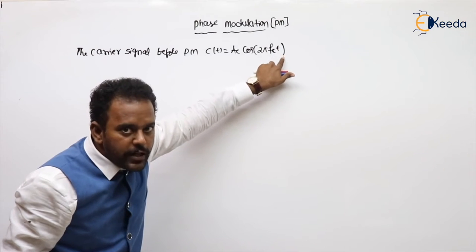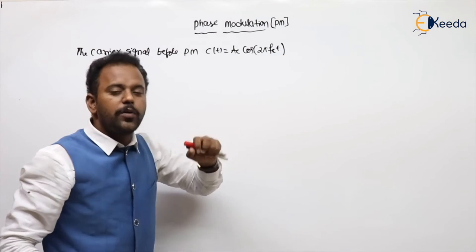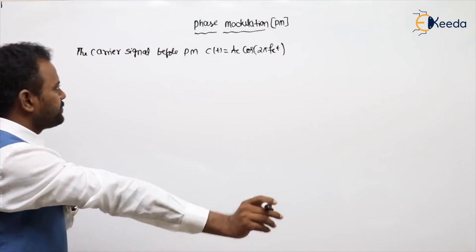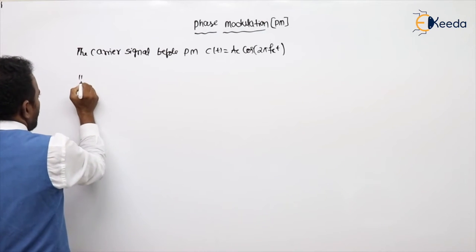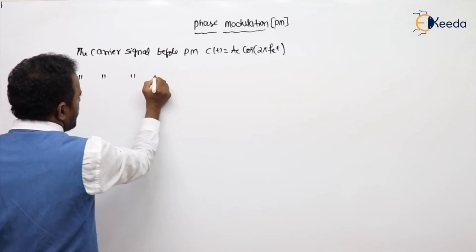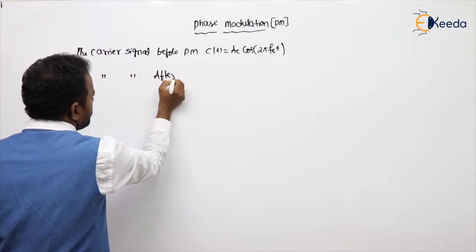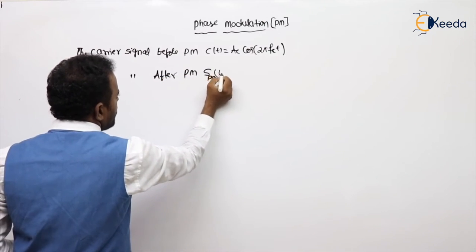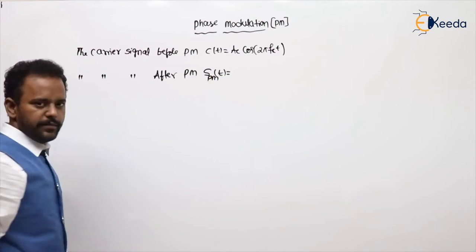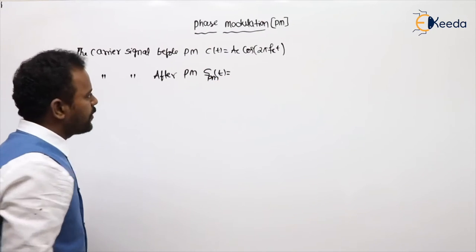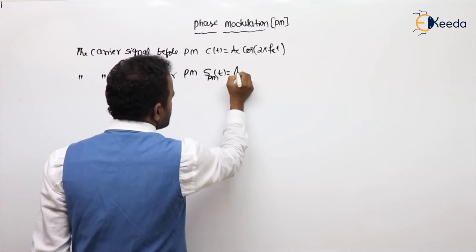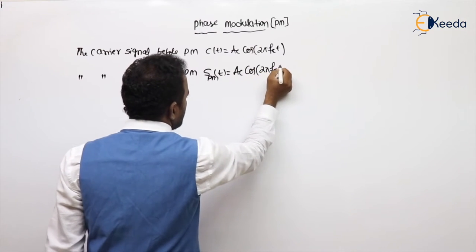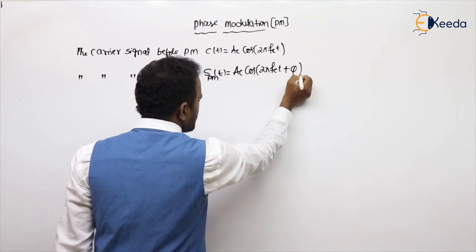Now, the 0 phase I am going to vary according to message amplitude — that is called phase modulation. Now I am writing the carrier signal after phase modulation. After phase modulation, it is becoming a phase modulated signal, which is: A_c cos(2πf_c·t + φ). Let us take some φ.